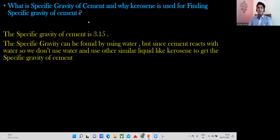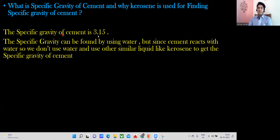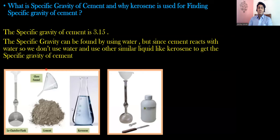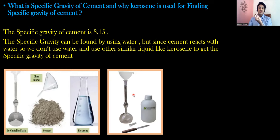We are going to do the specific gravity test for cement. The specific gravity of cement is 3.15. For finding specific gravity of fine aggregate we use water, but for cement we use kerosene. The reason is simple: if we use water, the moment cement comes in contact with water, hydration happens — and our main purpose is to find specific gravity, not to cause hydration. Since cement reacts with water, we use a similar liquid like kerosene. Cement and kerosene do not react, so we can find the specific gravity.